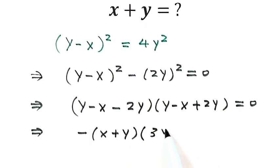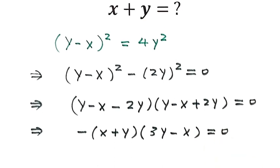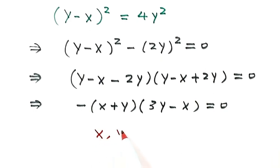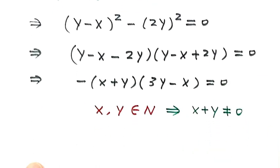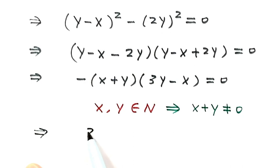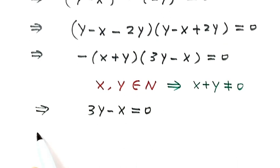Here, 3y minus x equals 0. Because given x and y are positive integers, x plus y cannot be 0. So that means this part equals 0. Then 3y minus x equals 0, so x equals 3y.